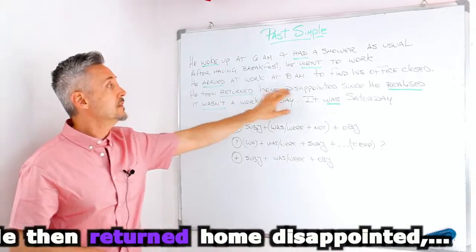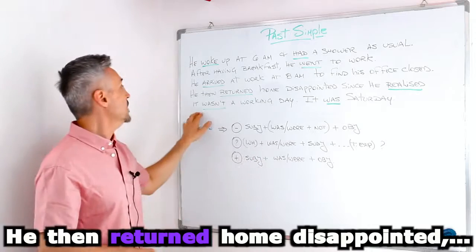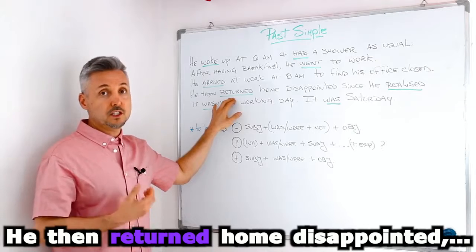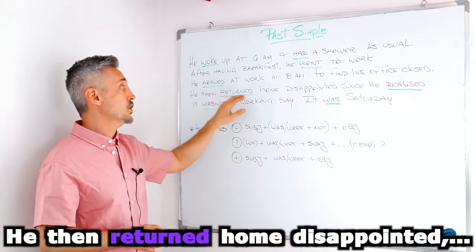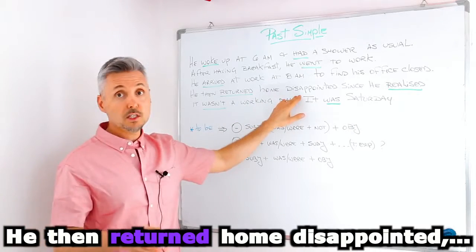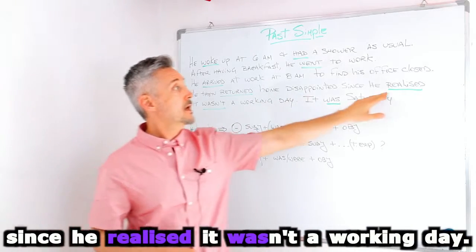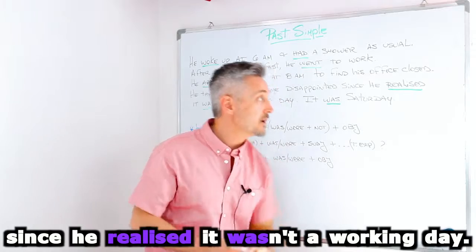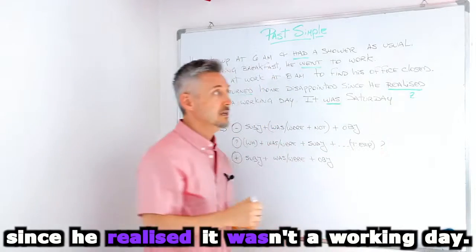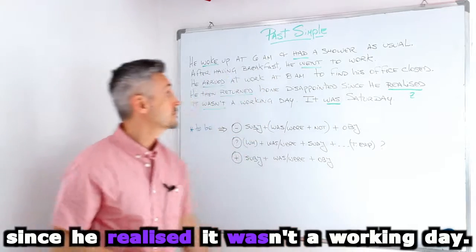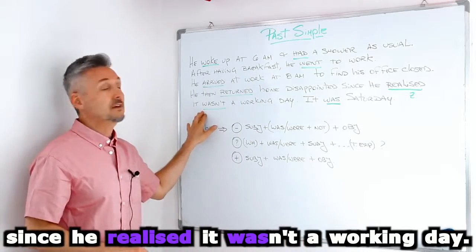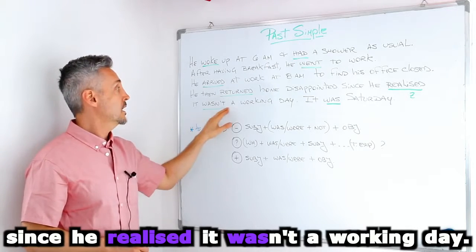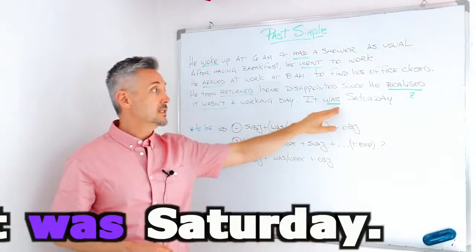'He then returned home disappointed since he realized it wasn't a working day.' Here, 'to return' is regular — 'returned,' adding -ed. 'Disappointed' is an adjective. 'Realized' is also regular — in American English it would be spelled with a z. Then the verb 'to be': 'it wasn't a working day' — 'was' is the past of 'to be,' and 'wasn't' is the negative. 'It was Saturday.'